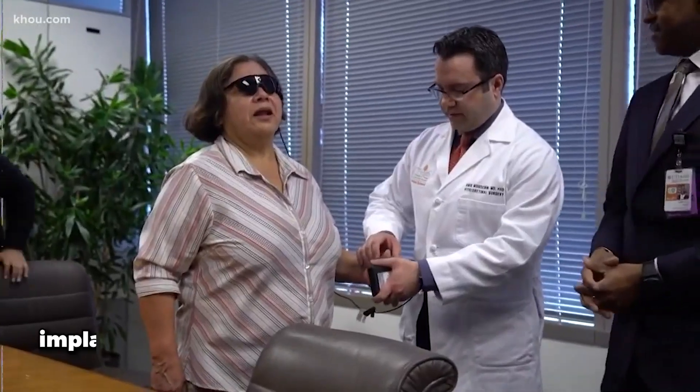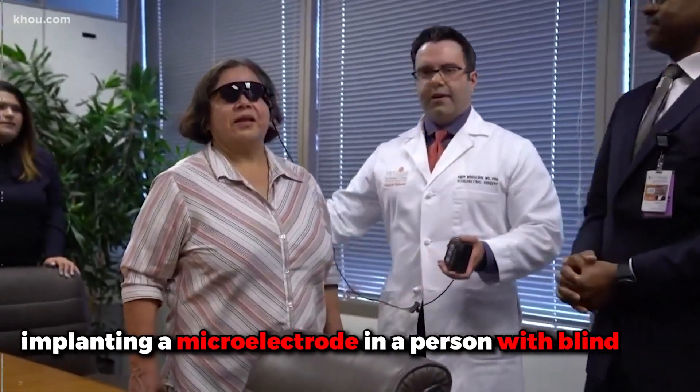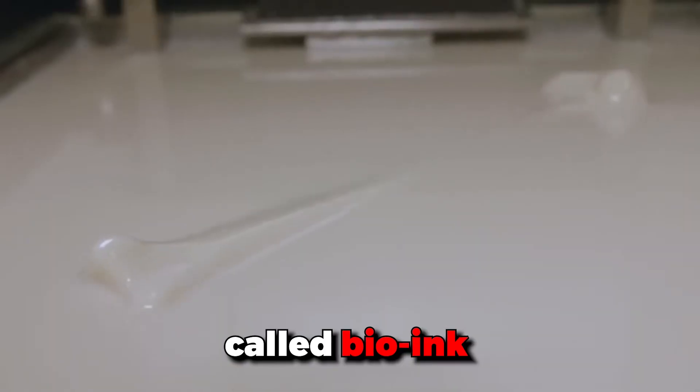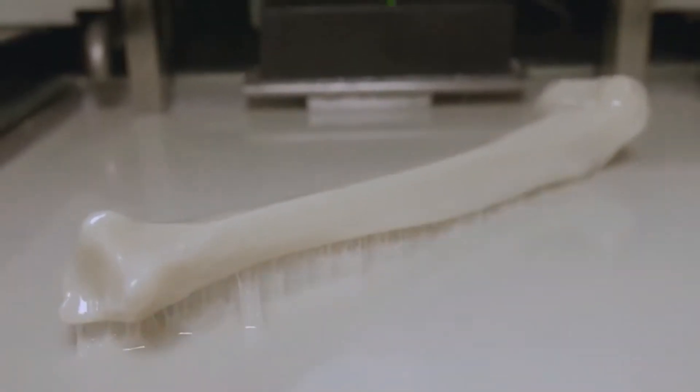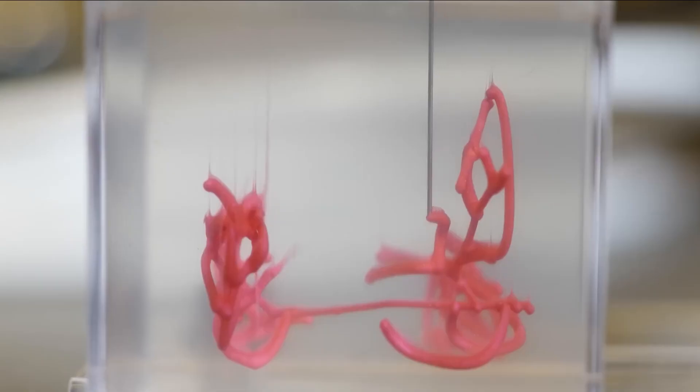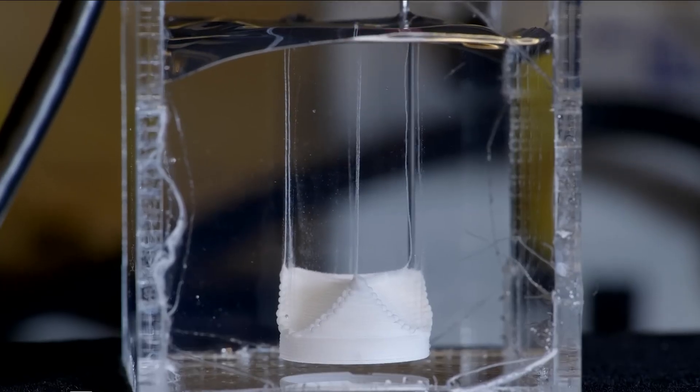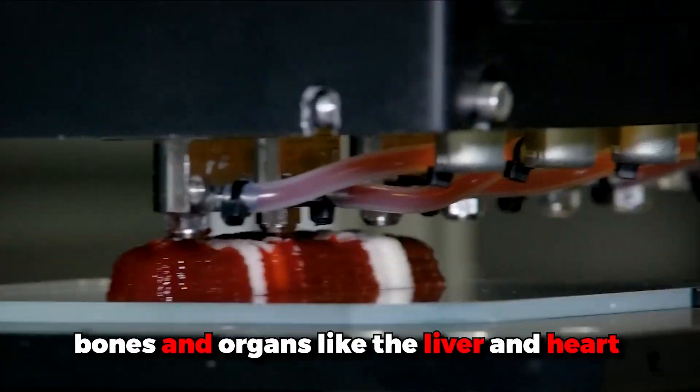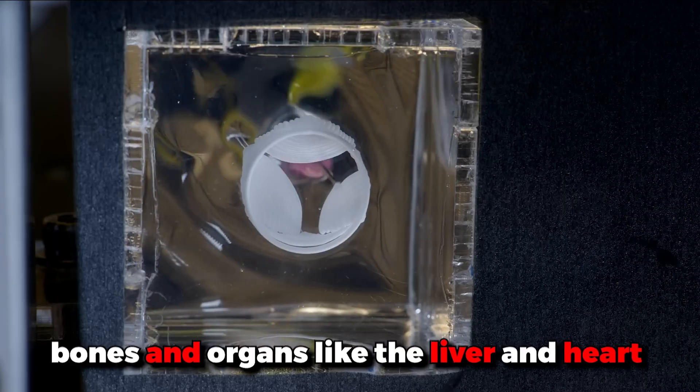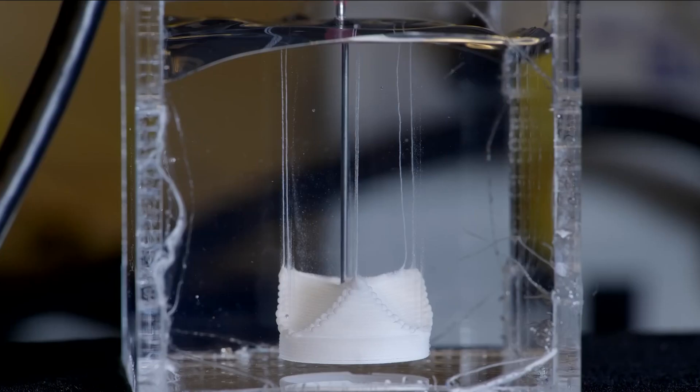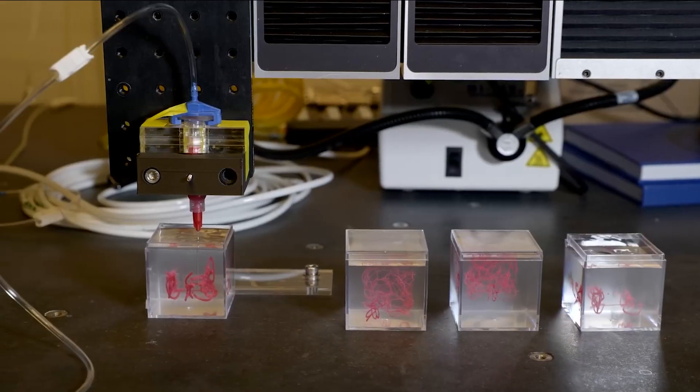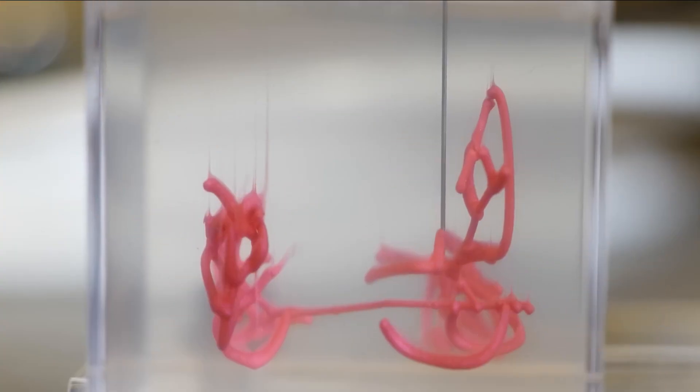3D bioprinting uses a special type of ink called bio-ink to create living organs and tissues. This amazing technology allows specialists to create cartilage, bones, and organs like the liver and heart. These top trends are expected to have a massive impact on healthcare as they continue to evolve and become more widely used.